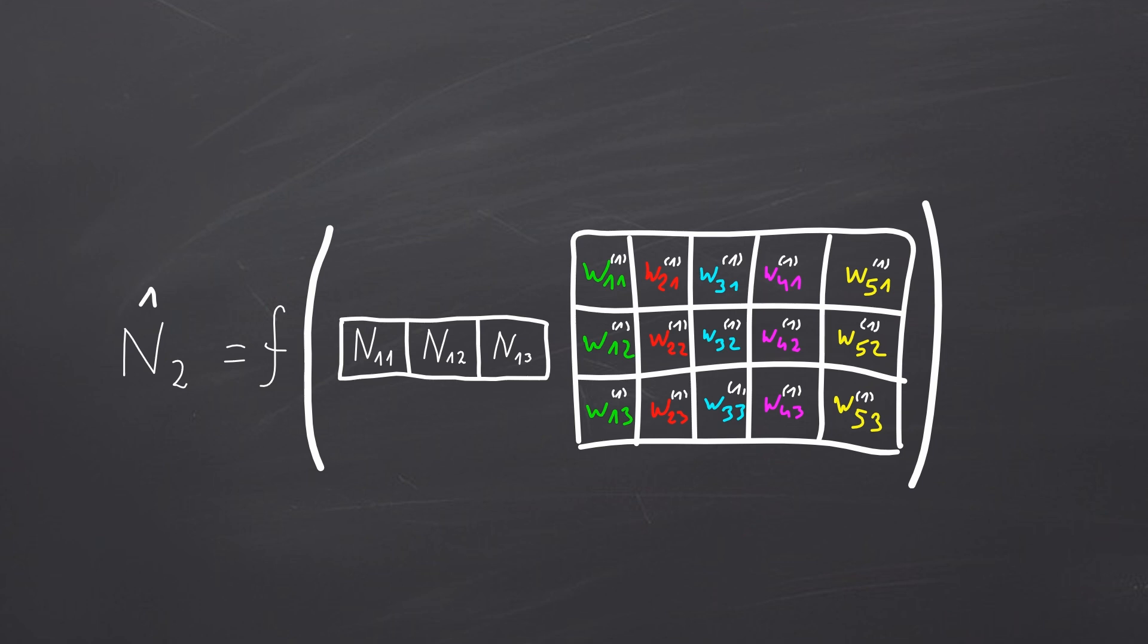By definition, when we multiply two matrices, each element in the resulting matrix is a dot product of a row from the first matrix and a column from the second. In this example, to calculate the output matrix, we need to multiply a single row of the N matrix by each column of the weight matrix, which is exactly what matrix multiplication is. So in essence, the forward pass for each layer is just matrix multiplication between input and weights, followed by application of the activation function to each output value.